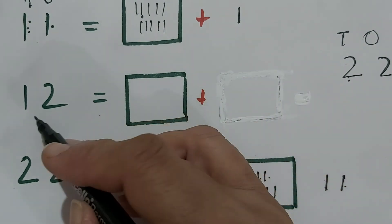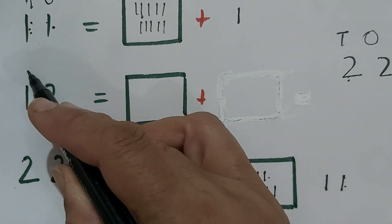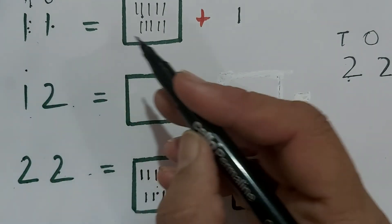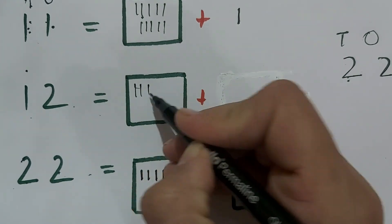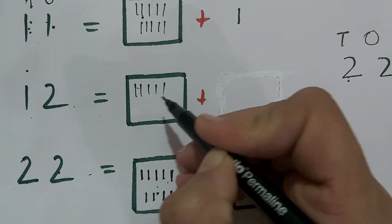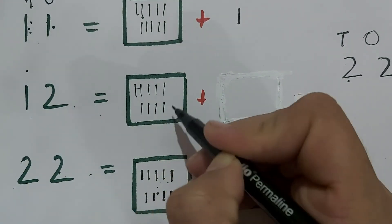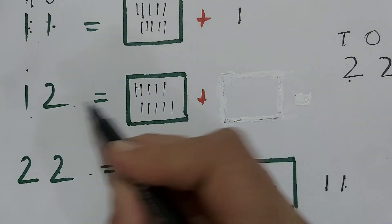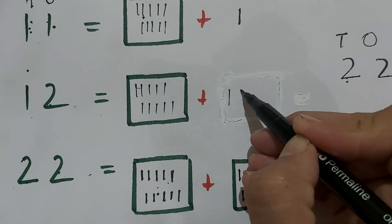Now 12 — how many bundles again? 1 bundle, 1 ten. Draw 1 square with 10 lines: 1, 2, 3, 4, 5, 6, 7, 8, 9, 10. And how many ones? 2 ones.